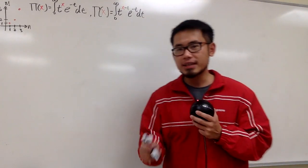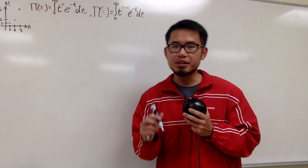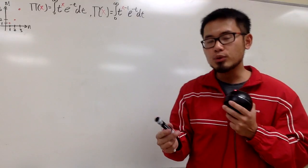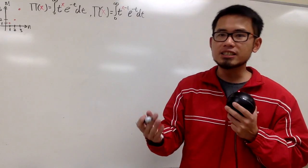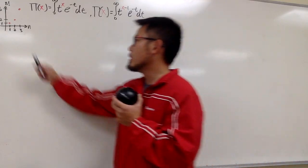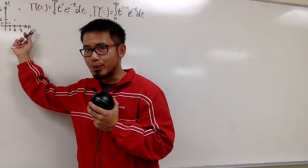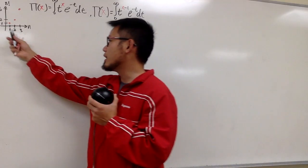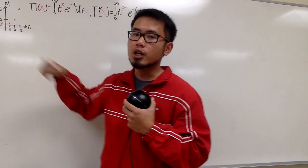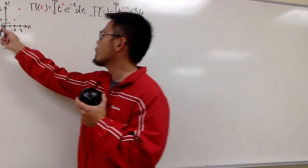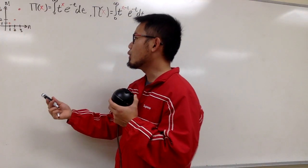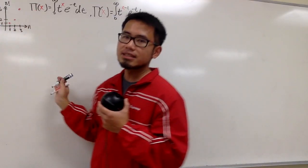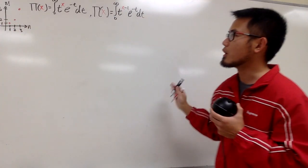Last time I introduced the π function and the γ function — they are right here. Both of them can be used to extend the concept of factorial. With the usual factorial, we can only plug in positive integers, such as n = 1, 2, 3, giving factorial values 1, 2, and 6. The goal is to make a continuous function and connect the dots, which is why we have these two functions.